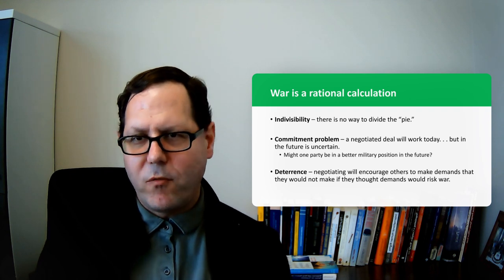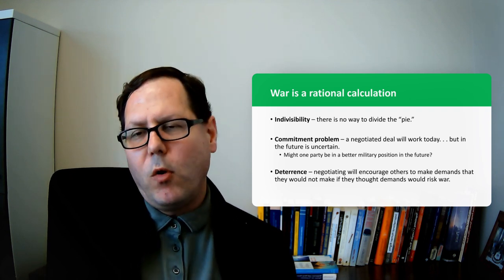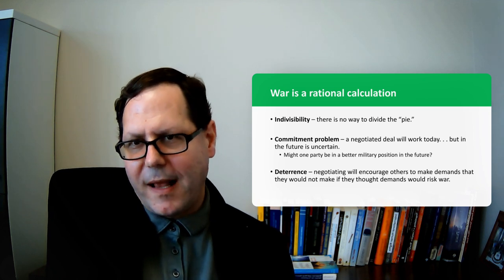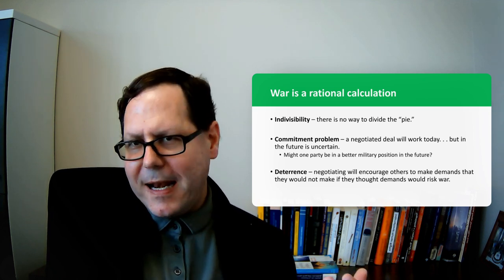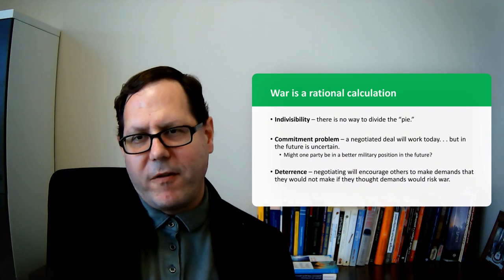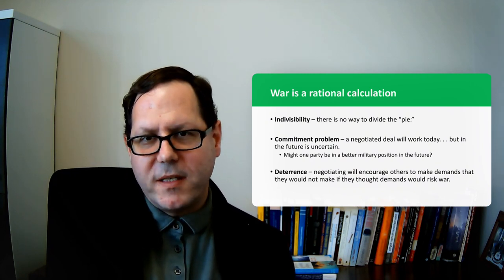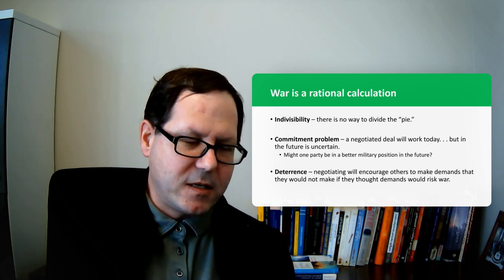At which point Britain and France say, if you attack Poland, that's it, that's war. Hitler at this point has convinced himself that Britain and France won't challenge him, that they won't push back. So he rolls into Poland, and Britain and France declare war.